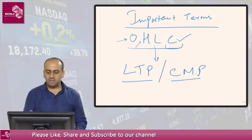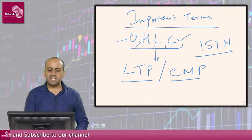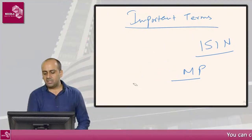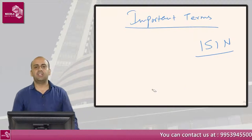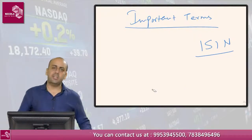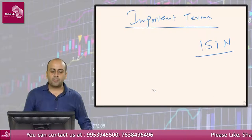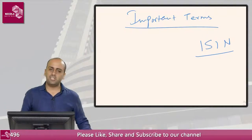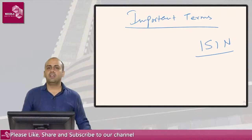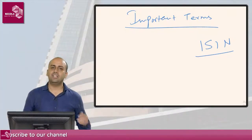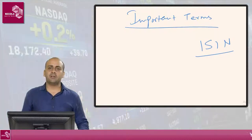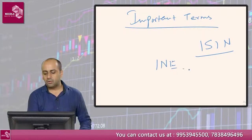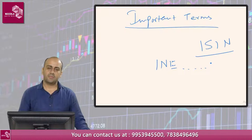The next term to understand is ISIN. ISIN stands for International Security Identification Number. You will notice that India has a security number that represents India. If it is an equity market, it will start with 'IN' followed by 'E', and then some numbers. This is the ISIN number.